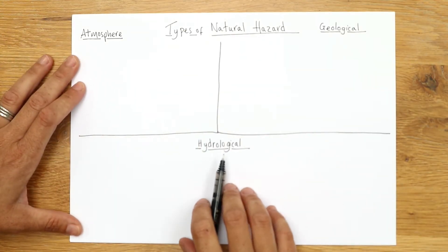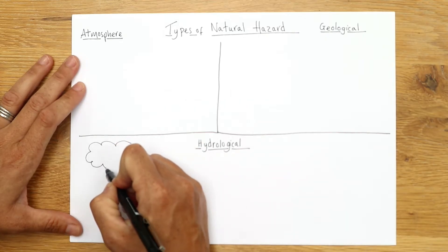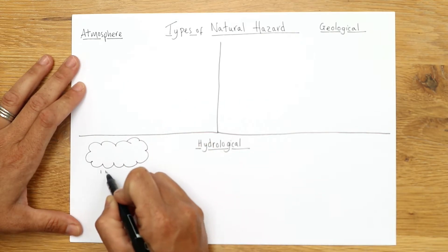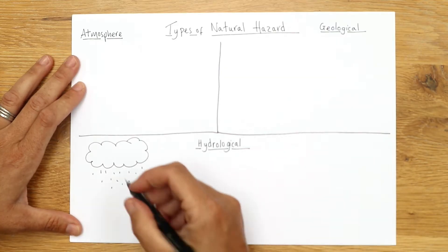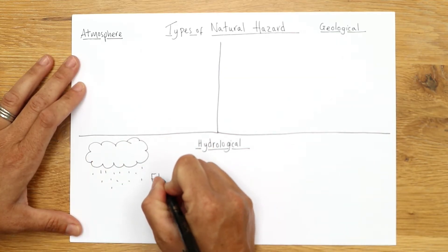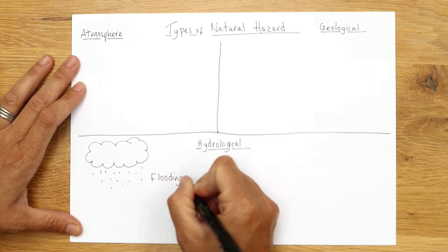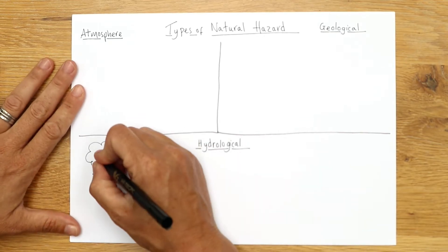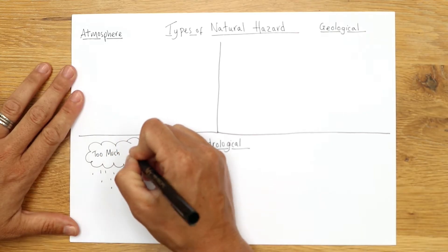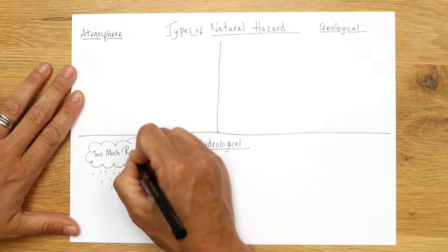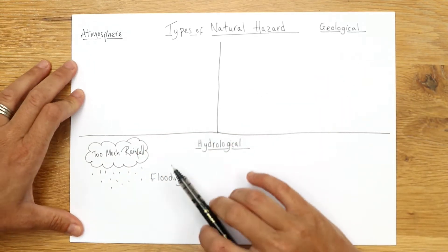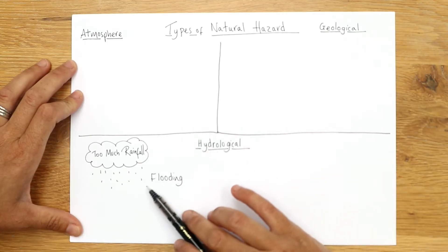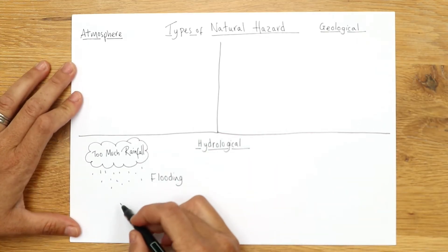So if we look at hydrological, and start by just drawing a cloud. So one of the main problems that we have, particularly in this country, one of the main sort of natural hazards is flooding. And that's because primarily of too much rainfall. Now, there are other reasons that flooding occurs, which we'll look into in more detail in another infographic. But the main reason, the number one reason is generally speaking too much rainfall.